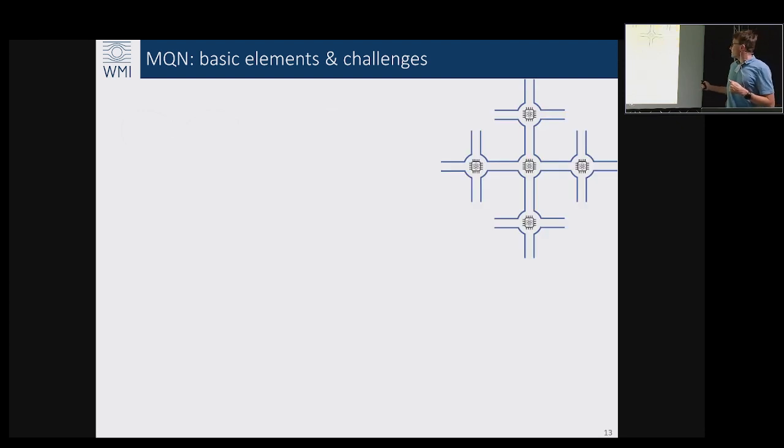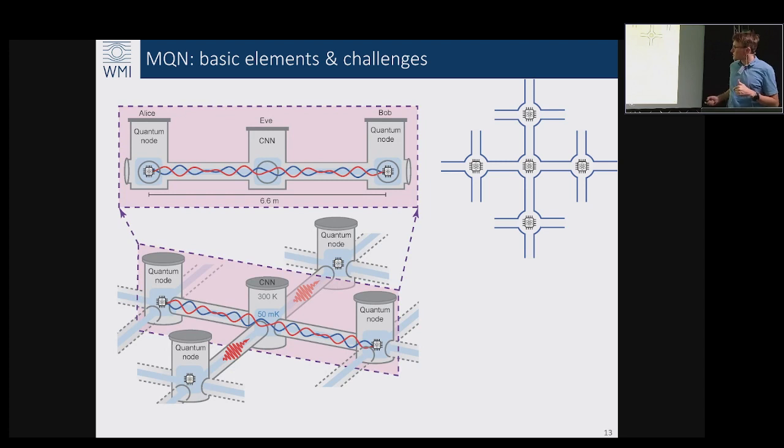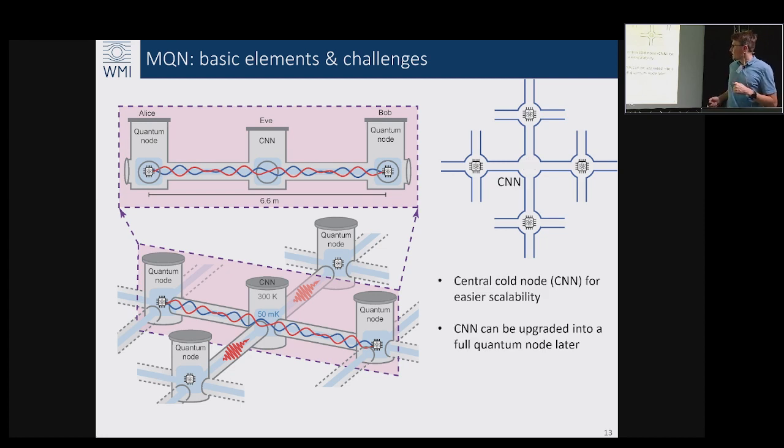While having this picture in mind we started to think what would it look in reality. This is what you can roughly sketch: having quantum nodes connected by microwave links. You can make some simplifications for technical reasons and not have this completely uniform plaquet but rather use some central nodes or cold nodes which wouldn't have any quantum systems, just to support the thermal load.